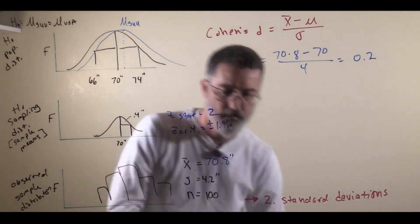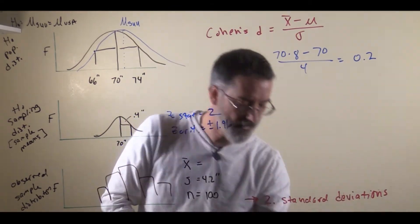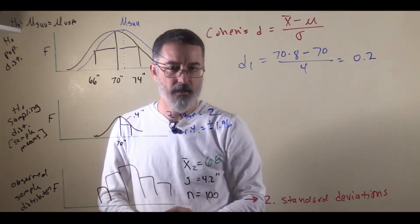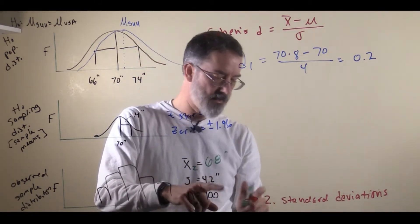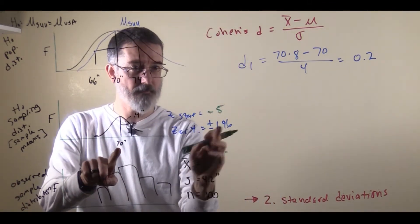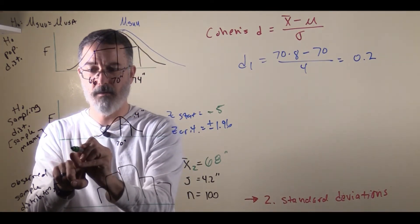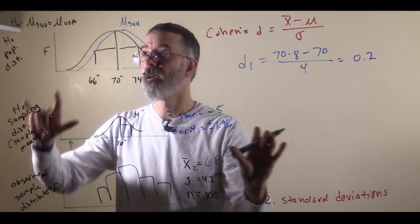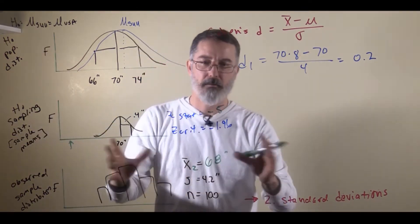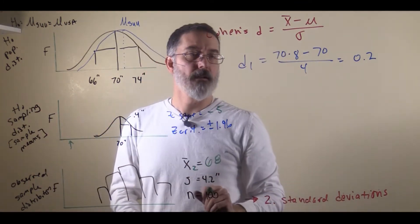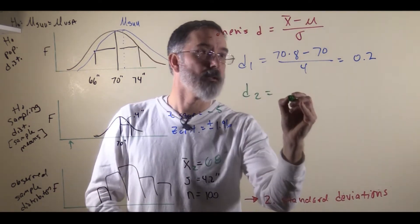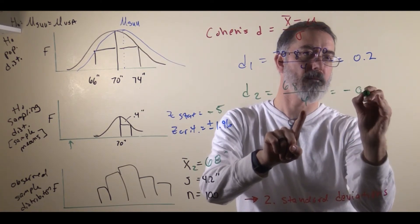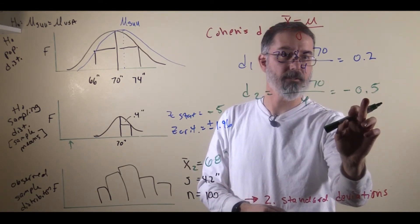Now let's consider a slightly different sample. This time we got a sample mean of 68 inches. We calculate the z-statistic, and it would be negative 5 — meaning our sample falls five standard deviations below. That is a very unlikely sample if the null hypothesis is true, and our z-statistic is more extreme than our z-critical. We can reject the null hypothesis. Then we calculate Cohen's d: 68 minus 70 divided by 4, which is negative 2 divided by 4, giving negative 0.5. Our sample mean is one half of a standard deviation below the population mean.